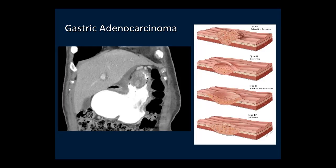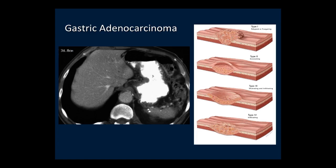For larger adenocarcinomas, there are four basic patterns. The large polypoid or fungating mass is an irregular mass with heterogeneous CT attenuation. The ulcerating or excavating adenocarcinoma is a mass where the majority is ulcerated, leaving only a thin rim of soft tissue. It is more common on the lesser curvature. We see thickening of the lesser curvature with a large ulcer crater, which can be very difficult to detect on CT if the stomach is not well distended.